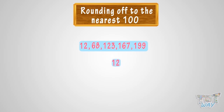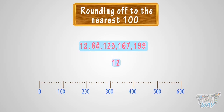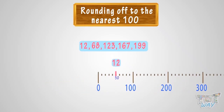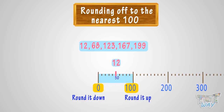See the number line — where can you fit 12 on this number line? It is somewhere between 0 and 100. Whenever you want to round a number, there are always two options: either we can round it down to the previous 100 or round it up to the next 100. Here is a rule: you have a 50 mark midway, just as there was a 5 mark when rounding to the nearest 10. If the number is above the 50 mark, you round it up; if below, you round it down. 12 is below the 50 mark, so we will round it down to 0.